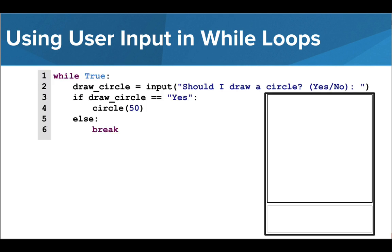We can rewrite this program to use a forever loop using while true to provide the same functionality. Instead of asking the user for input both inside and outside the while loop, we can simply use while true to start the program. Then we can ask the user if they want to draw a circle. If they say yes, we will draw the circle.